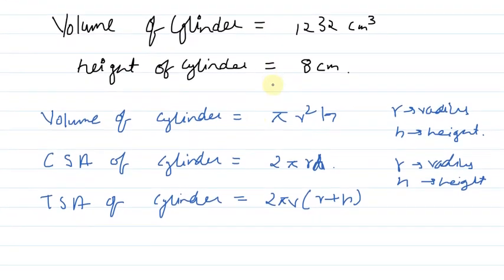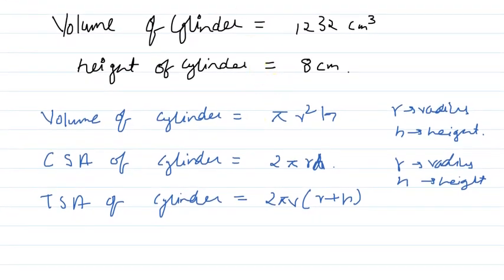So let's proceed and solve the question. First we will find the radius from the given volume, and then we will substitute the value of radius and height in the formula of curved surface area and total surface area to get the final result.